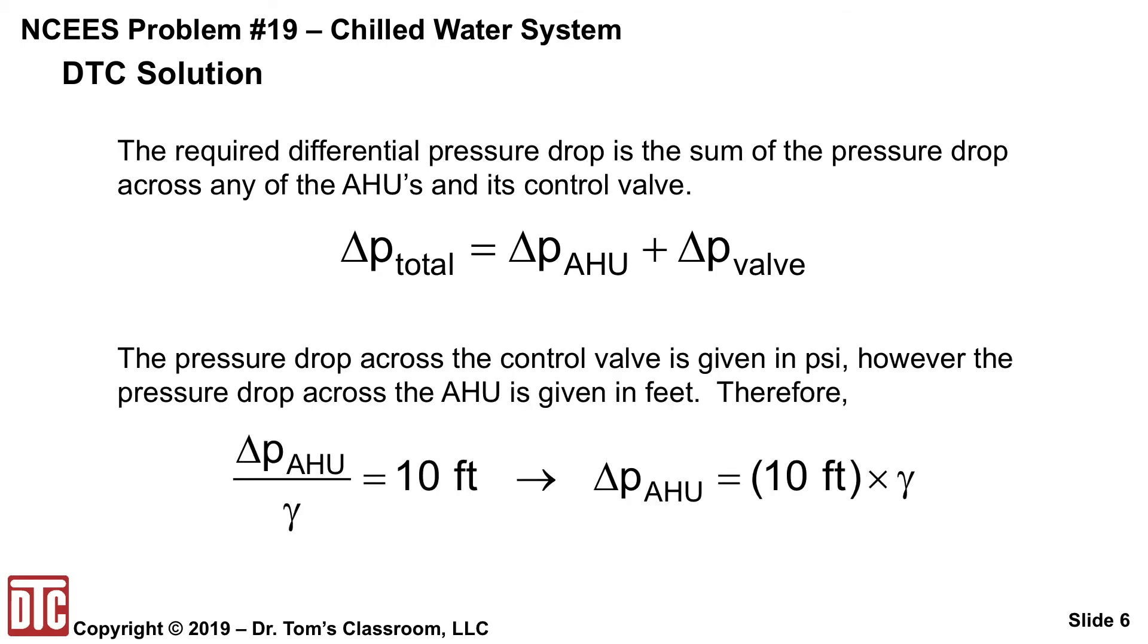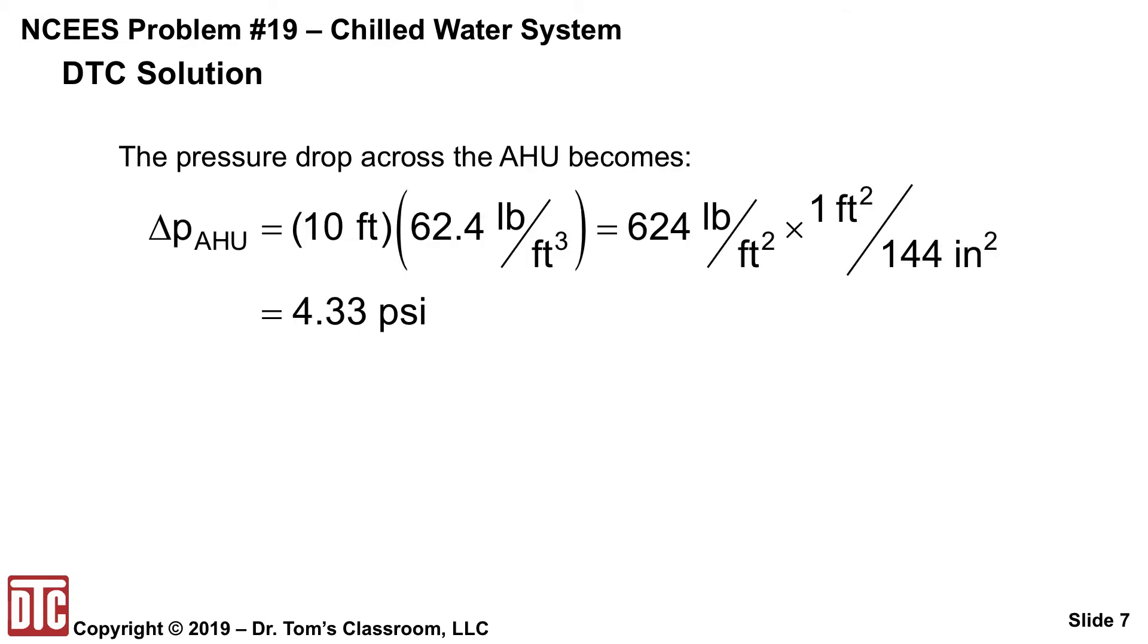So the 10 feet that you're given is delta P of the air handling unit divided by gamma. So you just need to multiply both sides by gamma. So the change in pressure drop across the air handling unit is just 10 feet times gamma. And this is given in 10 feet of water.